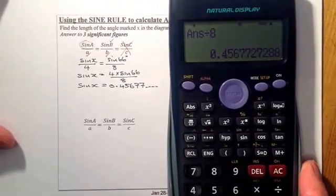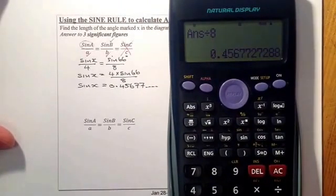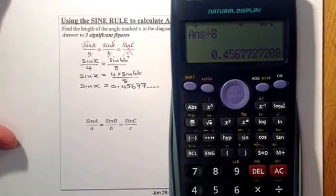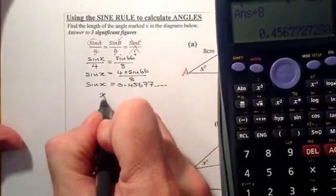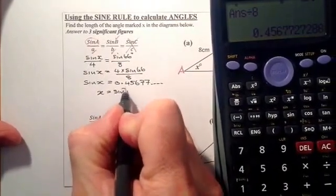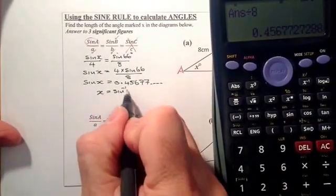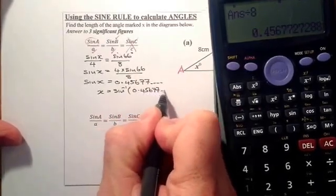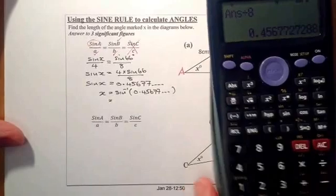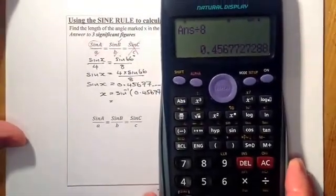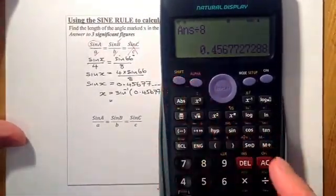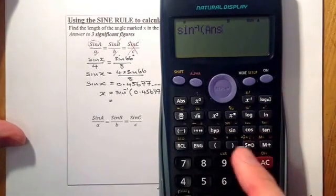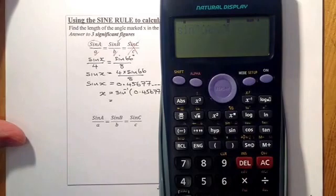I'm going to leave that in the calculator at the moment because to work out the angle, remember you need to do the shift sine or the inverse sine. I'll write that down as sine with a minus 1, and what I'll have in here will be that number that I've still got in my calculator. I'll bring the calculator over, press the shift button and sine, opens a bracket, put the previous answer in there, close brackets, and press equals.